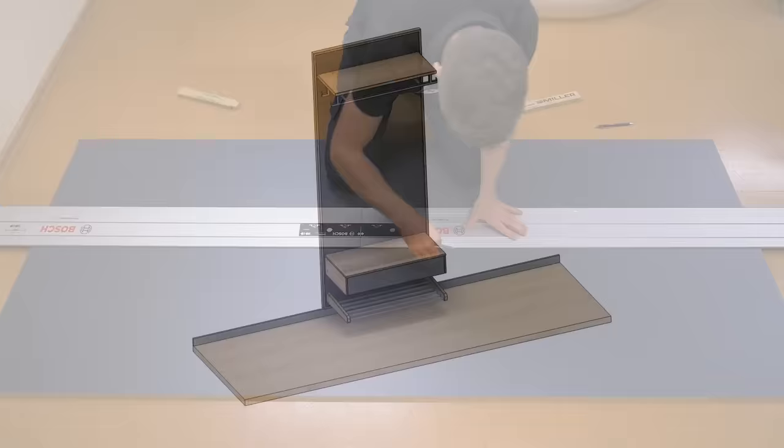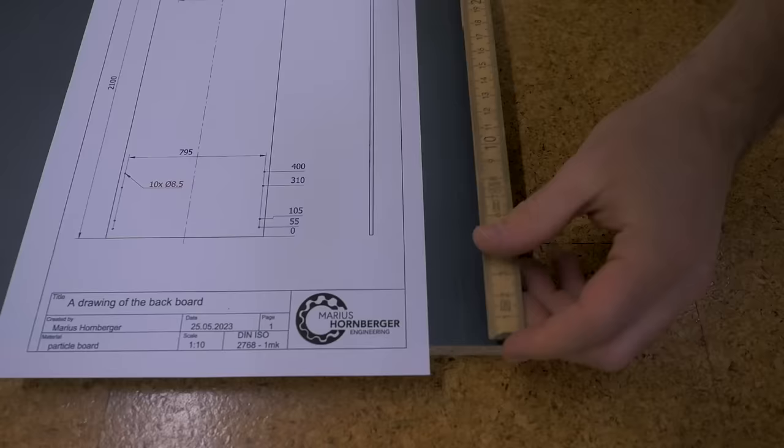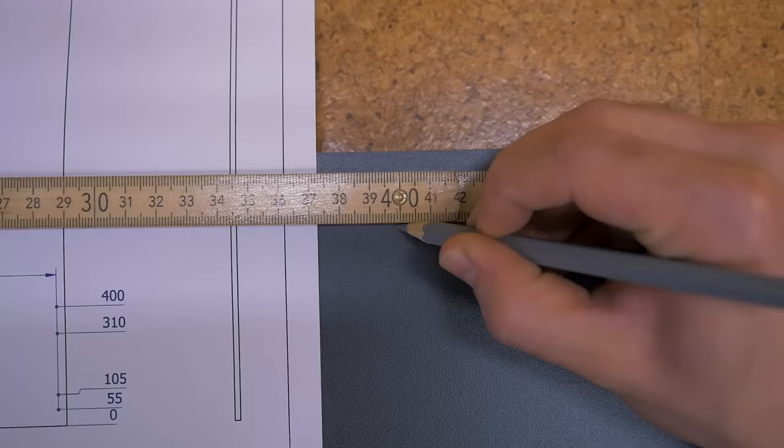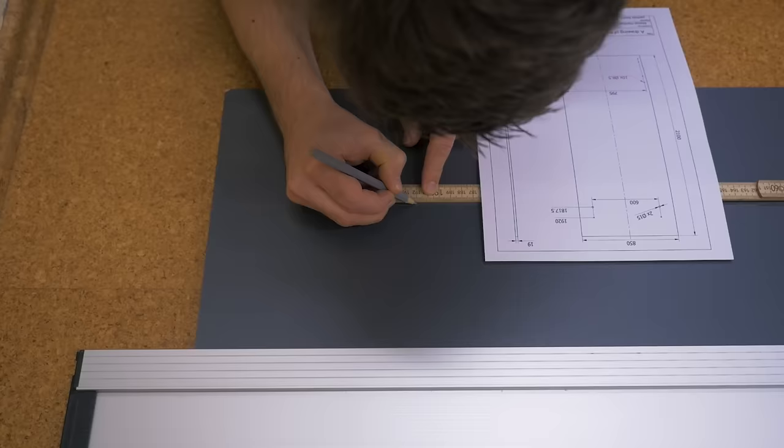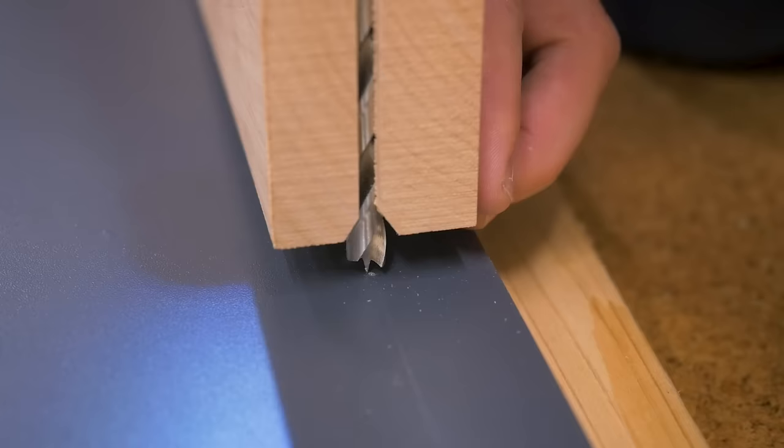I lay it flat on the bottom to layout all hole locations. Since I designed the whole thing as a 3D model I could print out a drawing and make this super easy. To drill everything straight I made a simple guide for the drill bit and a backboard will prevent chip out. Fantastic little jig and the hole size is a loose fit for an M8 bolt.